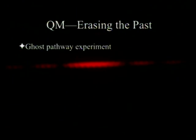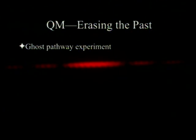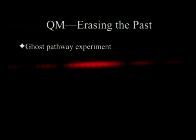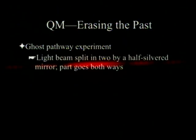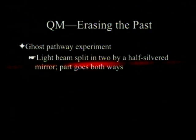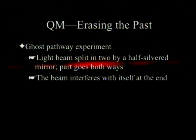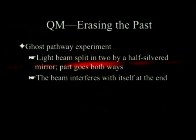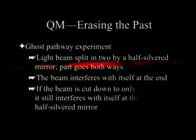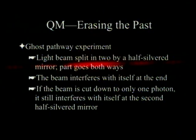Now the ghost pathway experiment is a little different. What you do is deliberately split light into two parts and then bring them back together. If you're doing this with a laser — pretty continuous light — you will see this effect quite easily. The beam will interfere with itself at the end of the experiment, so everything gets directed in one direction. If the beam is cut down to only one photon, it still interferes with itself at the second half-silver mirror.